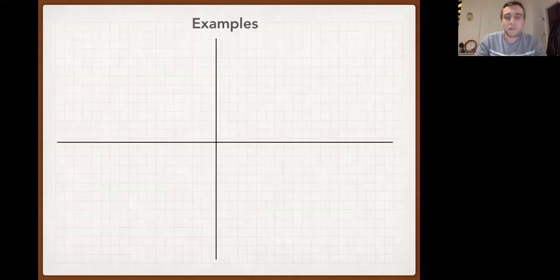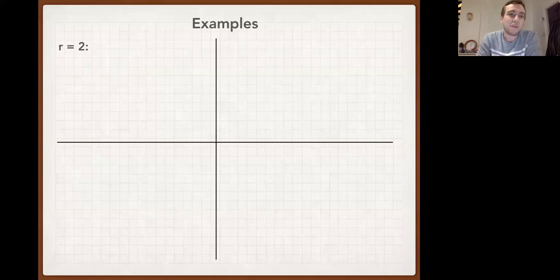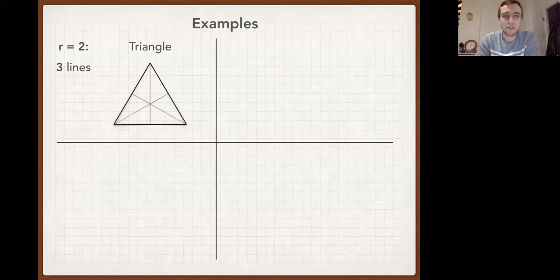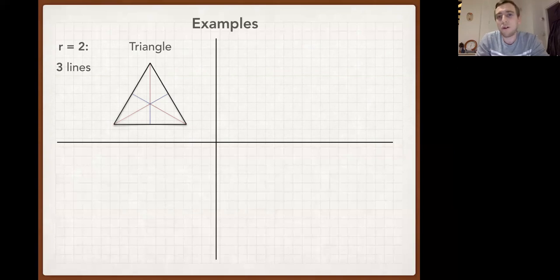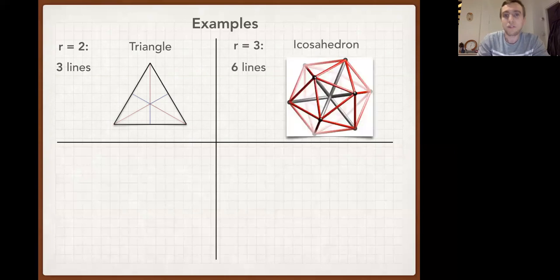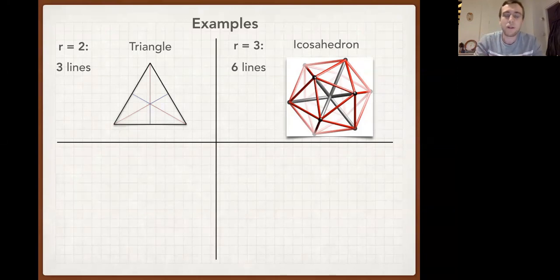Let's go through some basic examples in two dimensions. The maximum number of lines you can have is just three — that's the construction, it's very easy and you can't do better. For three dimensions, it's a little bit harder to see, but you can have six lines, and that's by taking the icosahedron and connecting the six pairs of antipodal points.